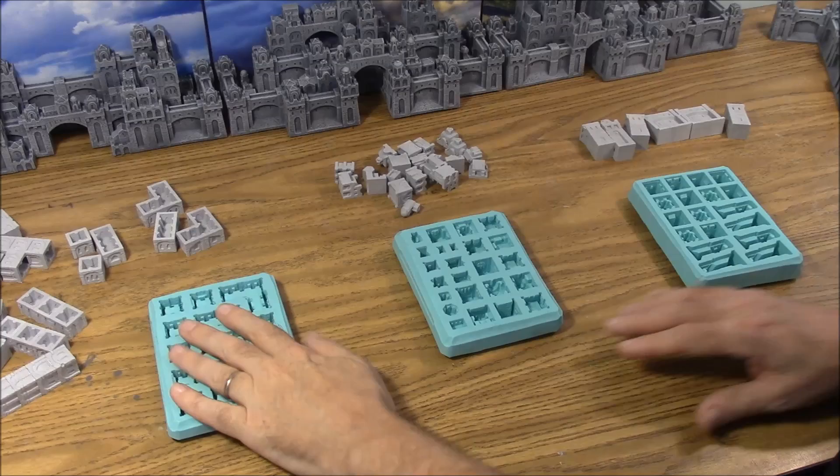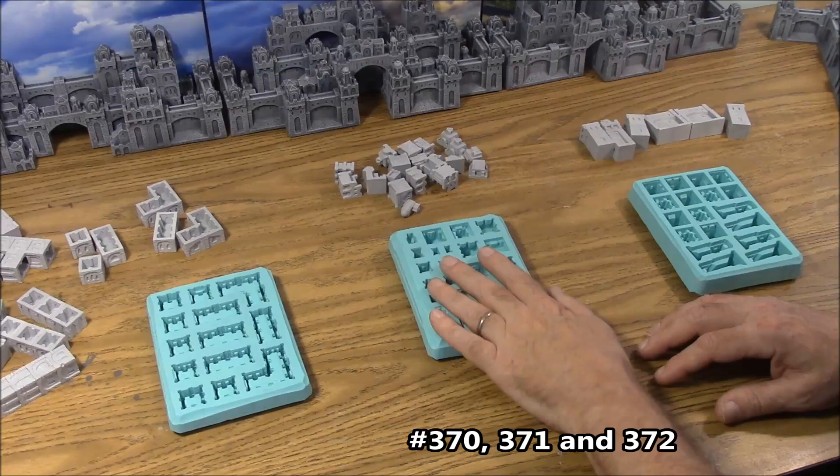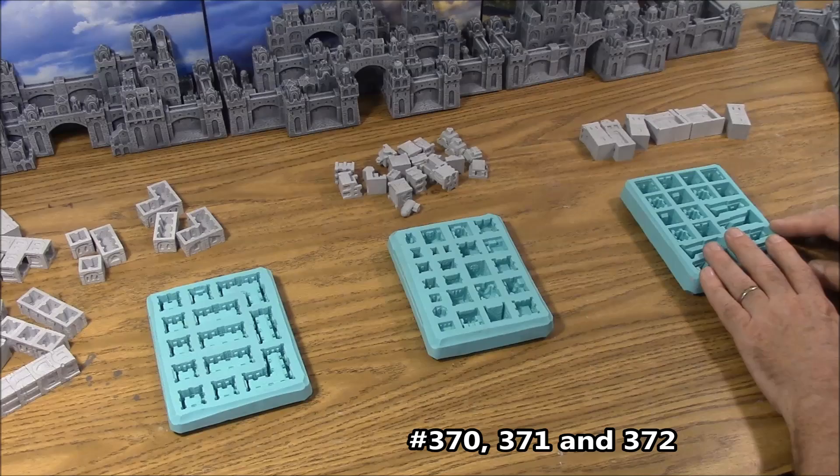Now I'm going to cover some basic information about these three building molds. This is mold number 370, which is the castle cube bases. This is mold number 371, which are the castle cube tops. And this is mold number 372, which are the castle cube walls.